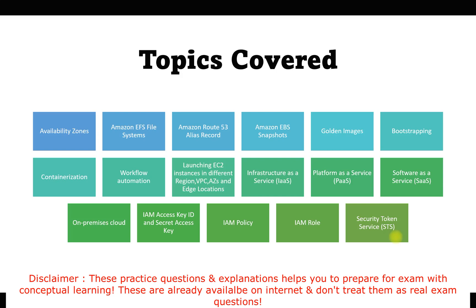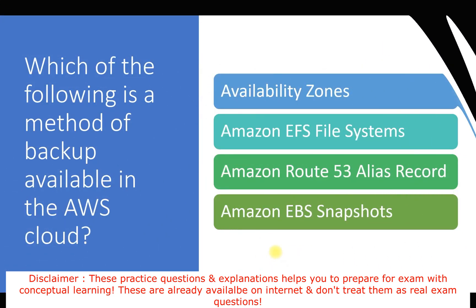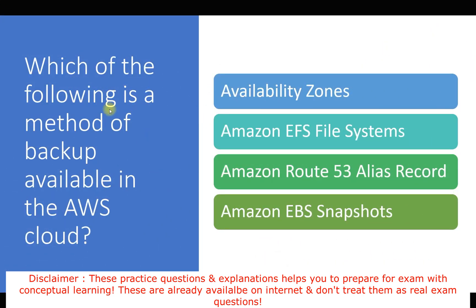Let's start with the first question. The question asks: which of the following is a method of backup available in the AWS cloud? The options are: availability zones, Amazon EFS file system, Amazon Route 53 alias record, or Amazon EBS snapshot.